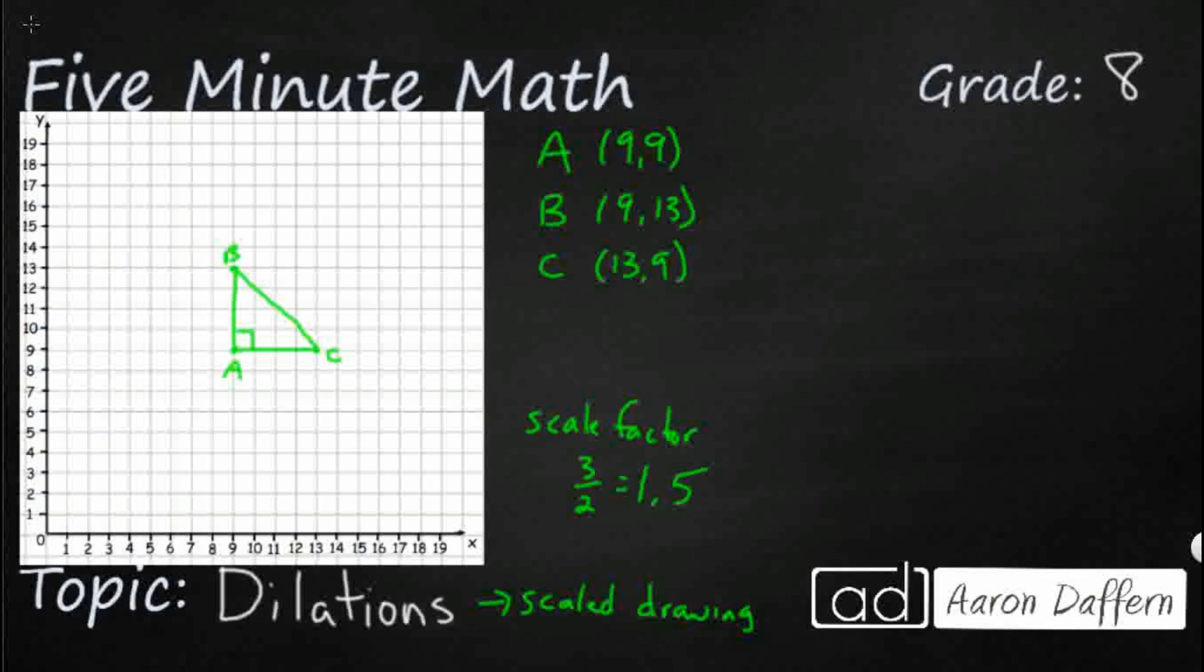But what we're going to do is we're going to plot another shape, and we're going to go ahead and let's call it DEF. And we're going to multiply everything by 3 halves, or 1.5. So let's see what that looks like.